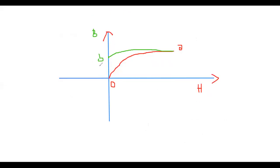Now if we want to cancel this remanent flux density at point B, we must reverse the polarity of the current. If we reverse the polarity and continue in the negative direction, the curve will take a new path until point C, where B has been cancelled. But H is now in the negative direction. If we continue increasing the current in the negative direction we reach saturation in the negative direction, and we call this point D.